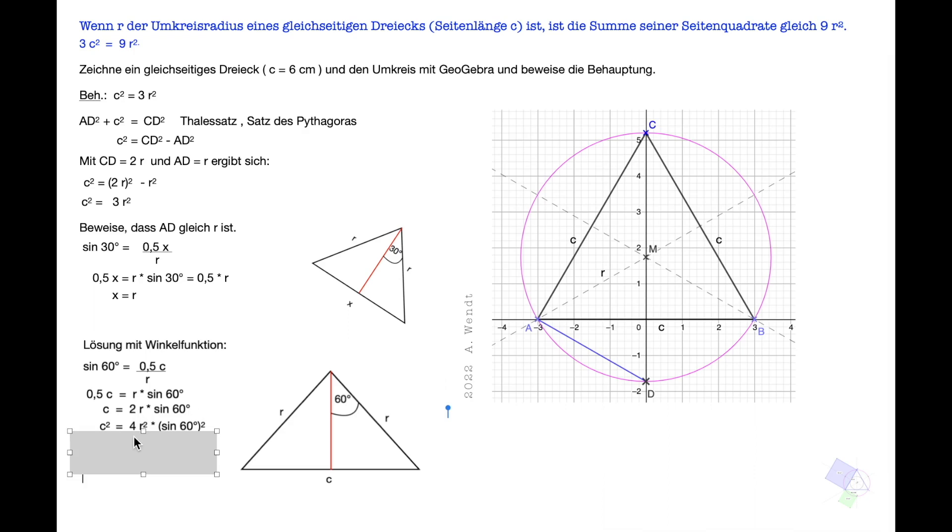2R in Klammern zum Quadrat ist 4R Quadrat. Und Sinus 60 Grad hoch 2 ergibt 3 Viertel oder 0,75. Wir halten also C Quadrat gleich 4R Quadrat mal 0,75. Und 4 mal 0,75 ergibt 3. Wir halten C Quadrat gleich 3R Quadrat. Also ihr seht, auch mit den Winkelfunktionen kommt man zum Ergebnis.